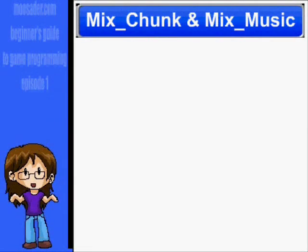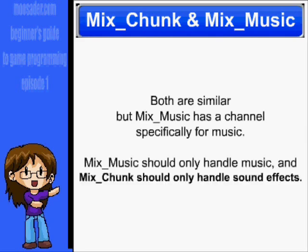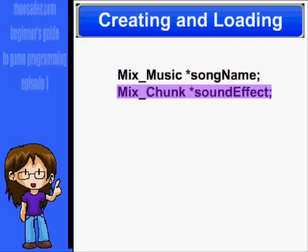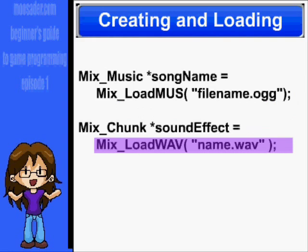We have Mix_Chunk and Mix_Music available to us, so what's the difference? They both have pretty similar arguments, but Mix_Music has a special channel exclusively for music. Mix_Chunk should be used for sound effects. Creating each of these is pretty similar to creating surfaces and will look like this: Mix_Music song_name, Mix_Chunk sound_effect_name. For music files, use the Mix_LoadMUS function, and for sound files, use the Mix_LoadWAV function.